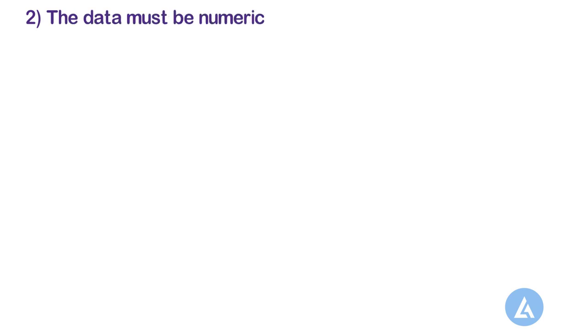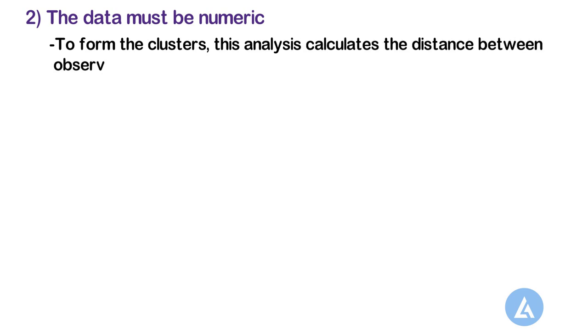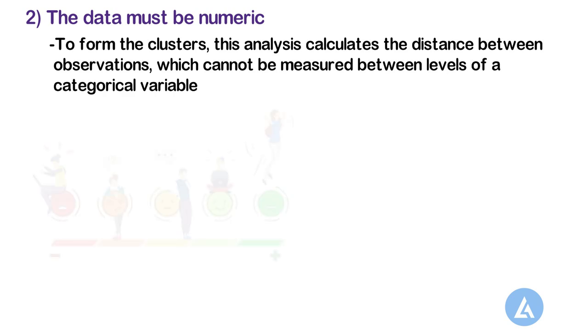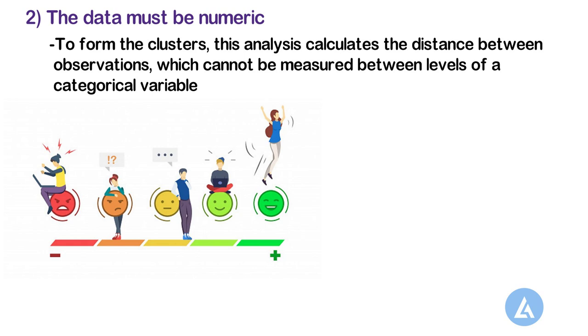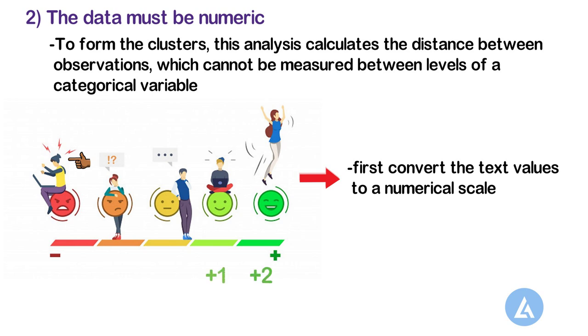The data must be numeric. To form the clusters, this analysis calculates the distance between observations, which cannot be measured between levels of a categorical variable. To use a categorical variable in the analysis, you must first convert the text values to a numerical scale. For example, an analyst measures customer satisfaction using the categories very satisfied, satisfied, unsatisfied, and very unsatisfied. To perform Cluster Variables Analysis, the analyst records these categories as plus 2, plus 1, minus 1, minus 2.